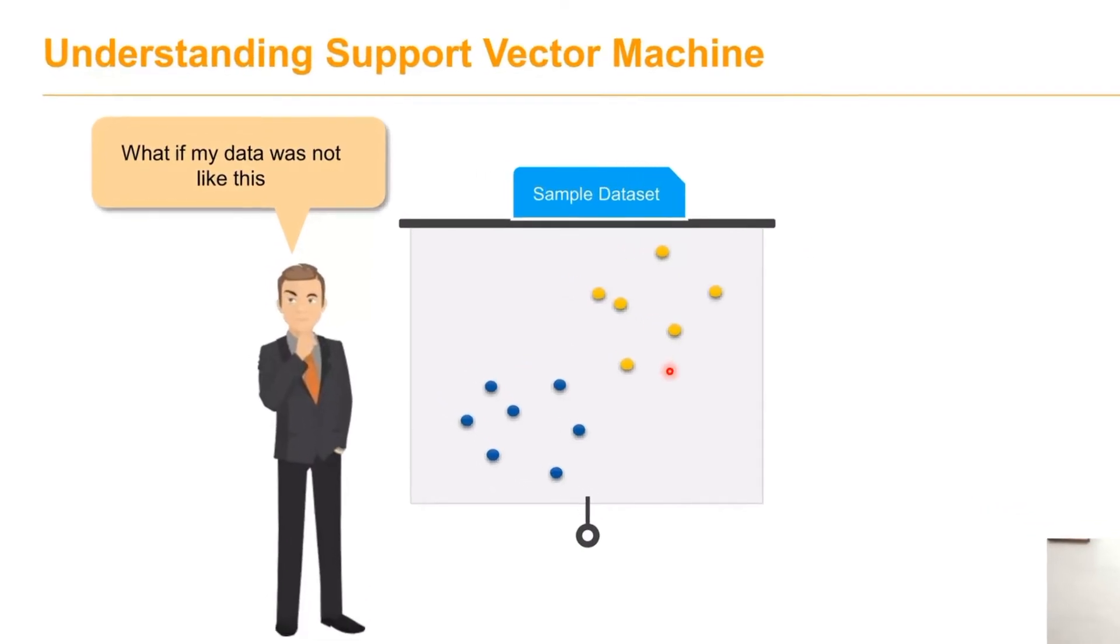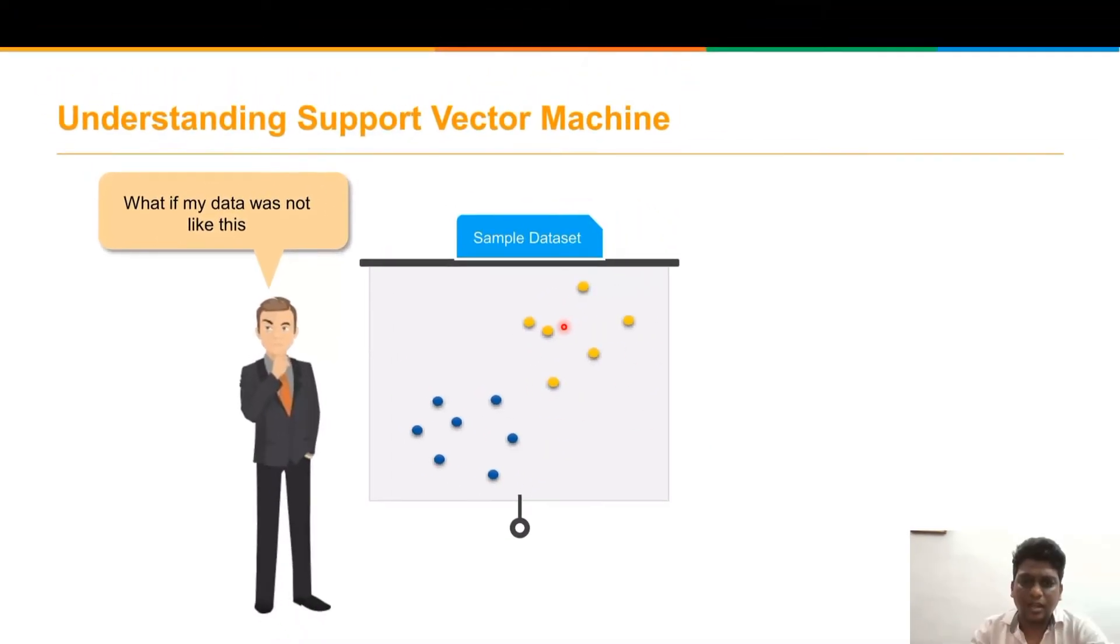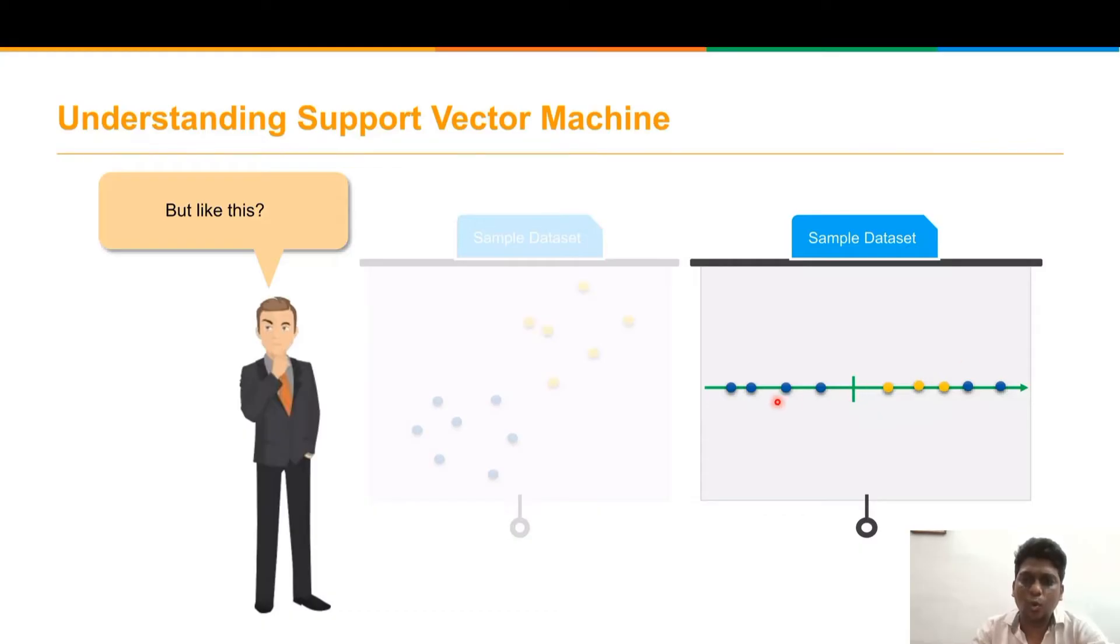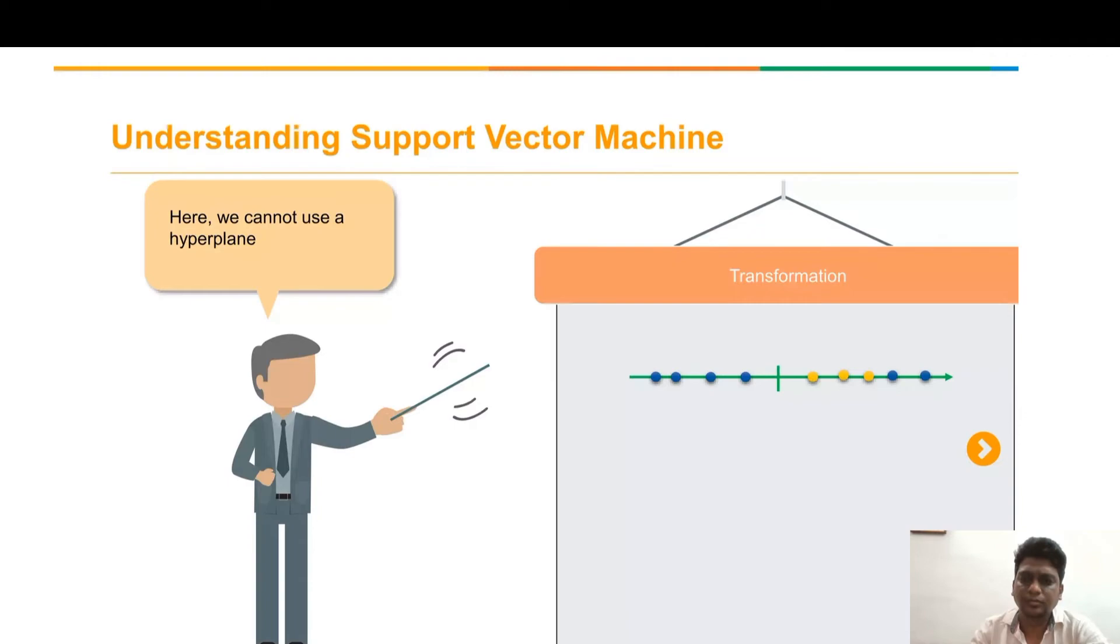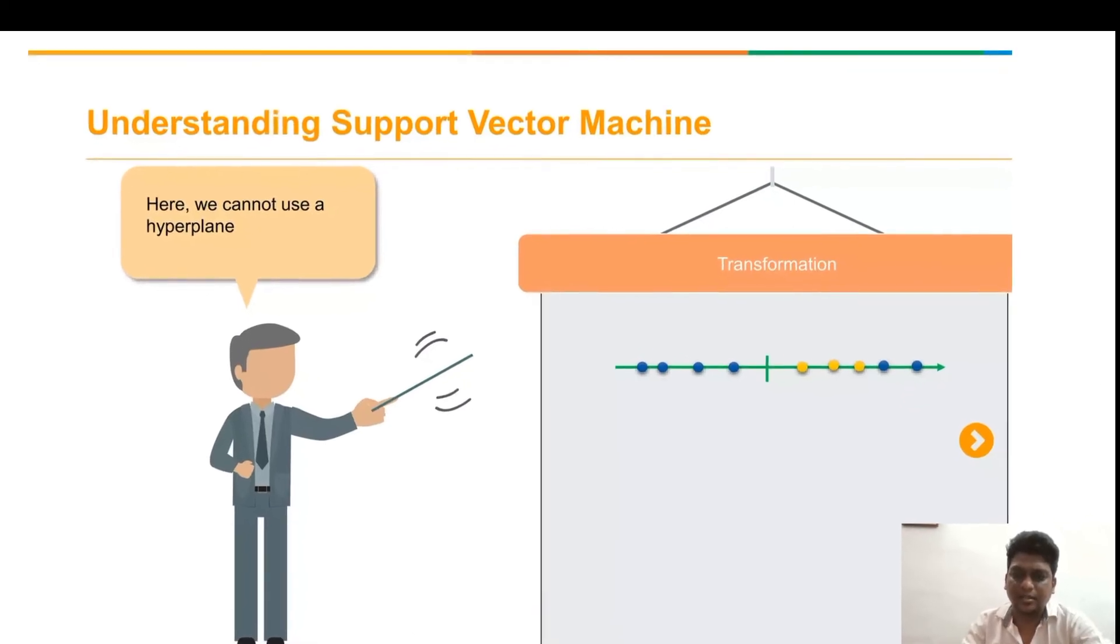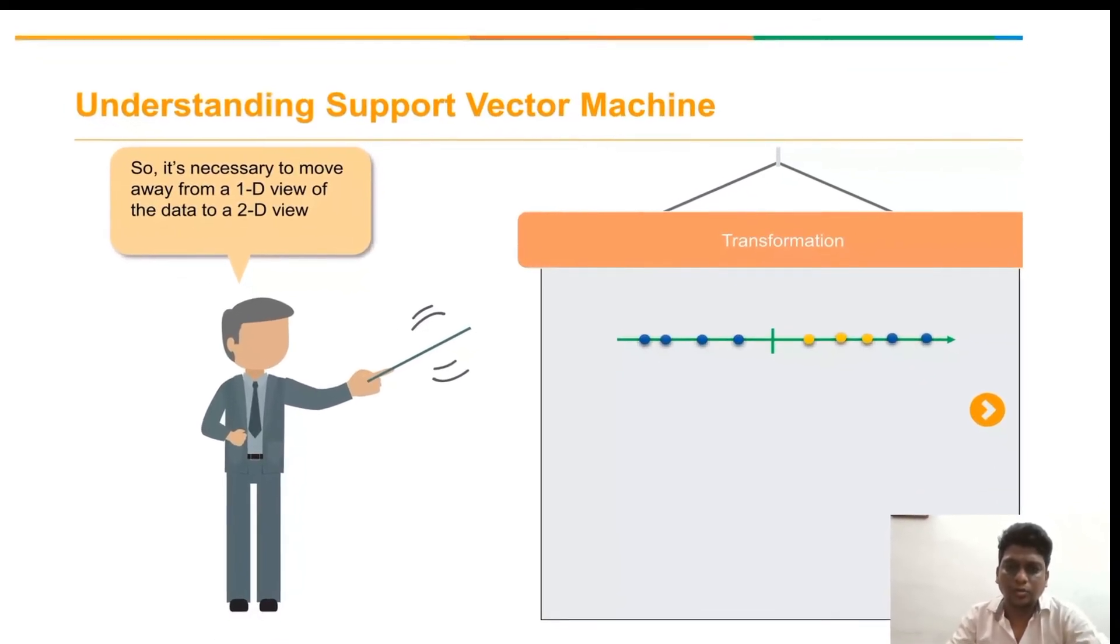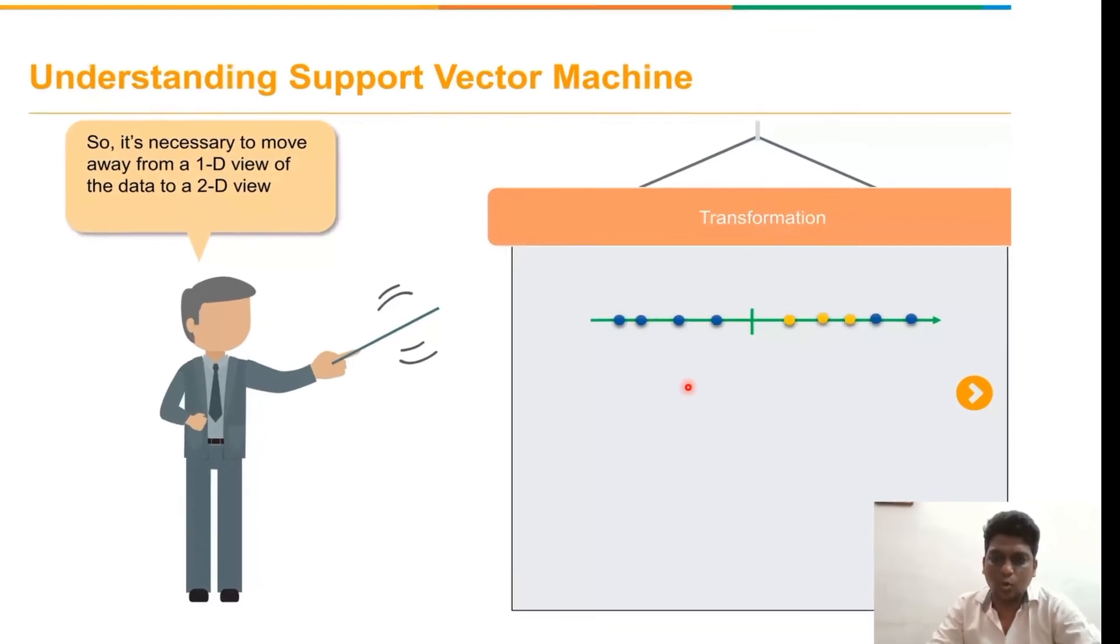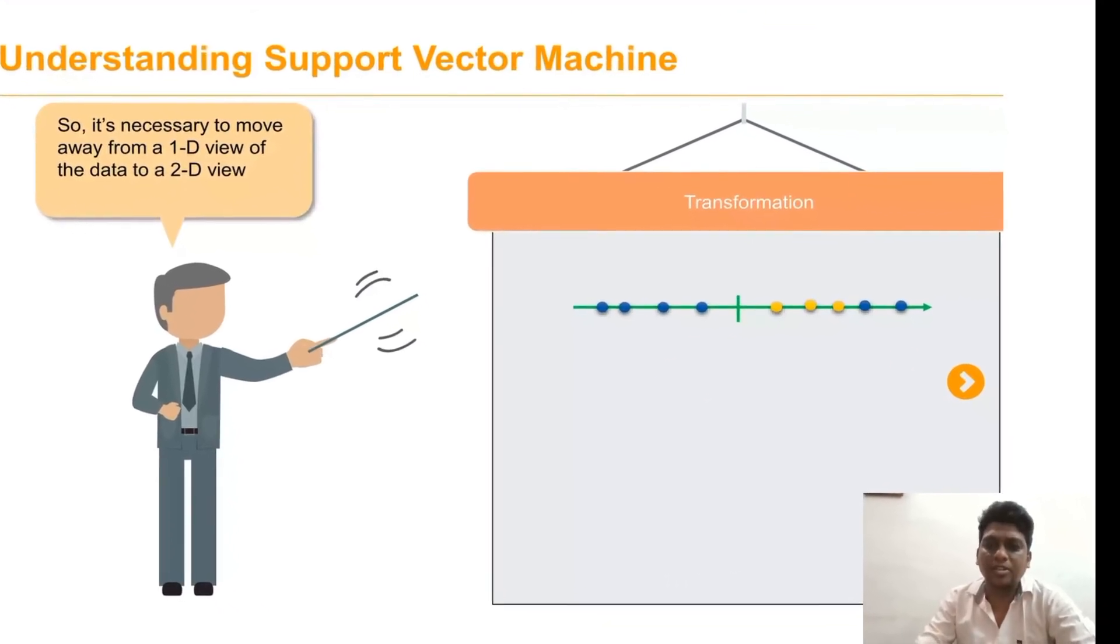This is a sample data set. If this sample data set is chosen, we can get the optimal hyperplane. But in case of this one-dimensional sample data set, we can't get the optimal hyperplane. So what we have to do now? We can't choose this hyperplane here in this data set. It is necessary to convert this one-dimensional into a two-dimensional data.